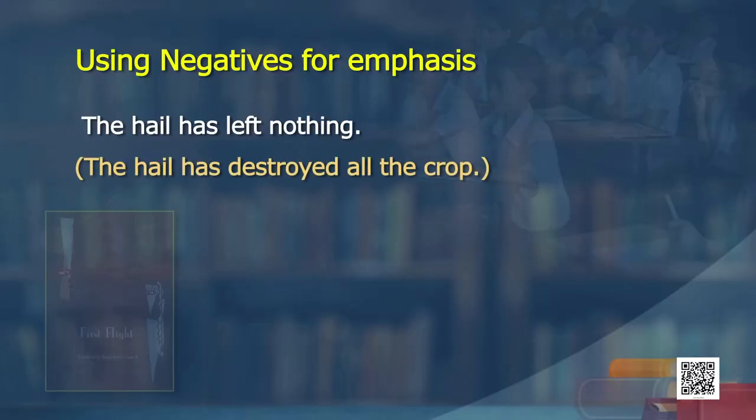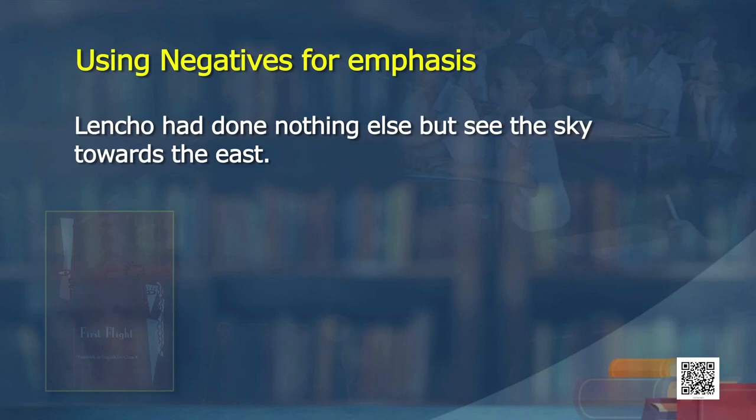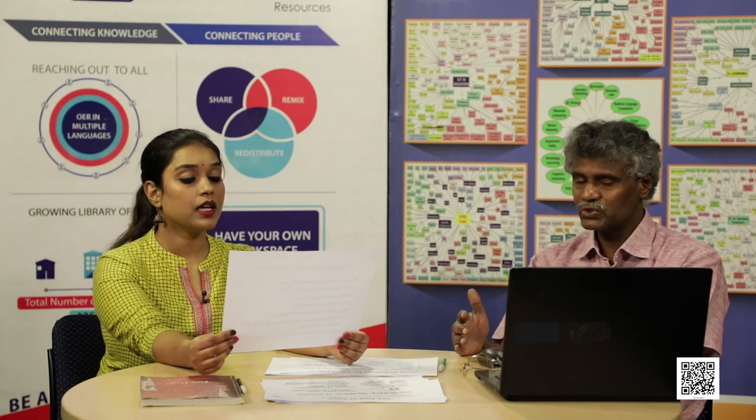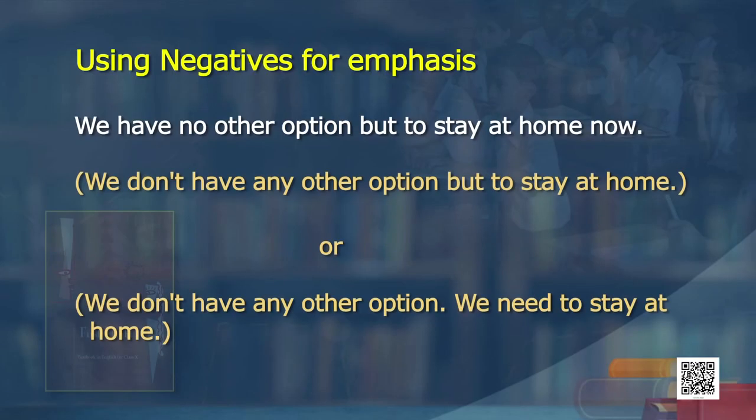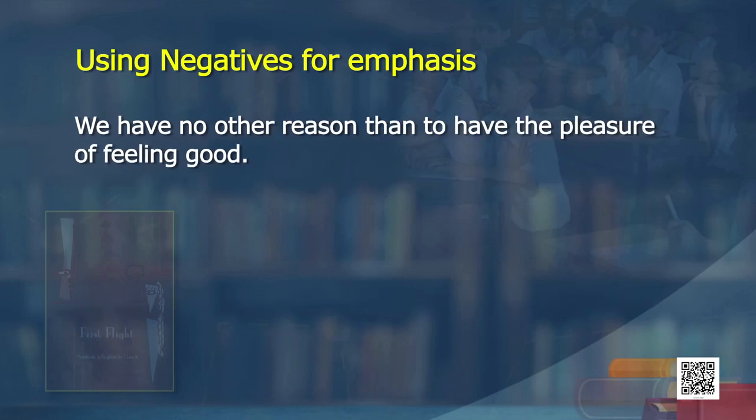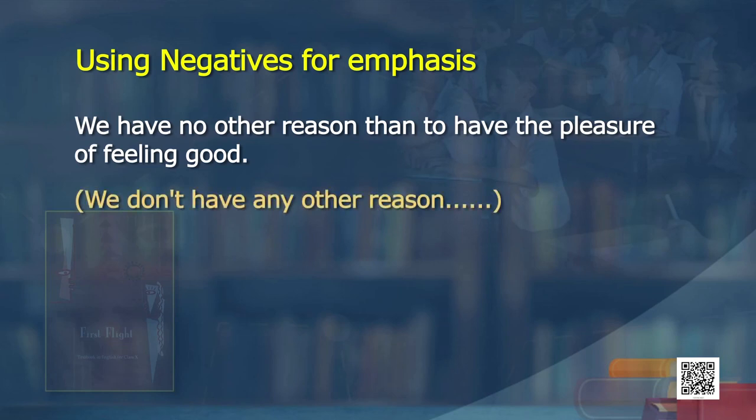Lencho had done nothing else but see the sky towards the east — because there was nothing else to do, some hope. This means Lencho could not do or think anything but see the sky towards the east. We have no other option but to stay at home in the current situation. We have no other reason than to have the pleasure of feeling good. These are all examples of negative emphasis — using negatives for emphasizing something.